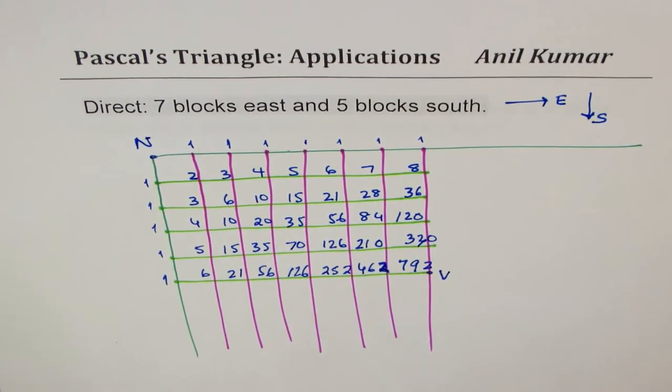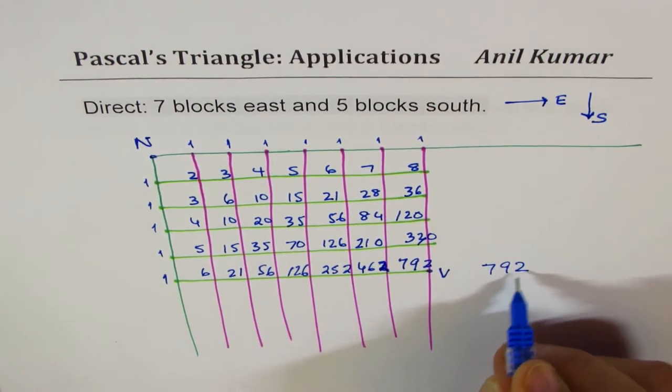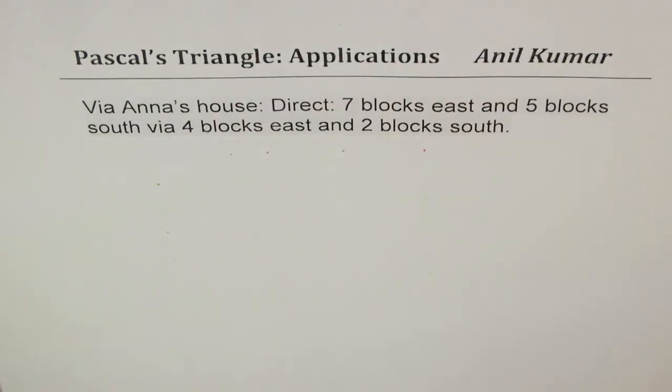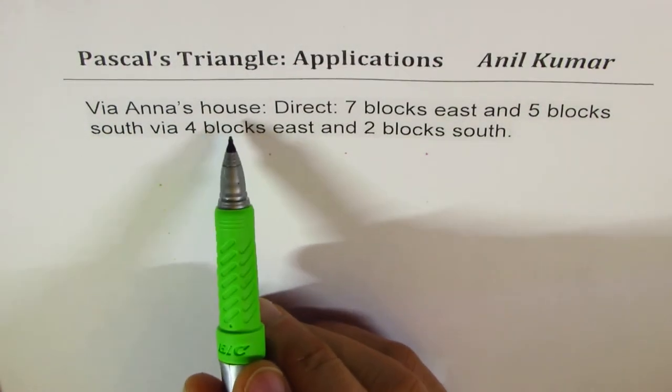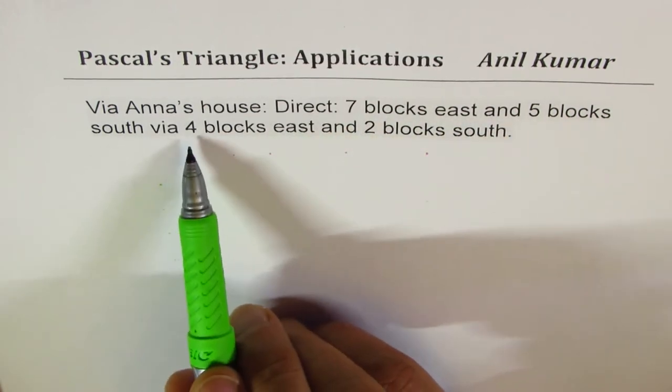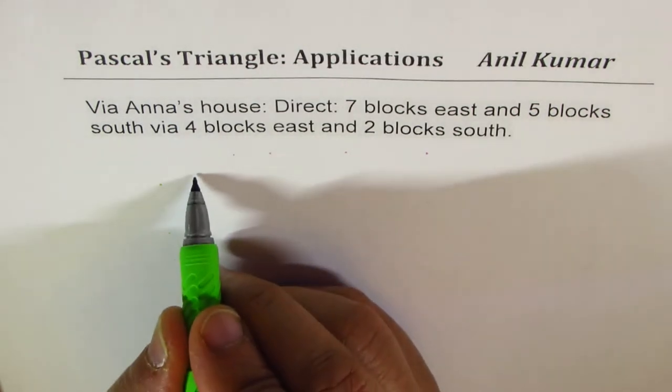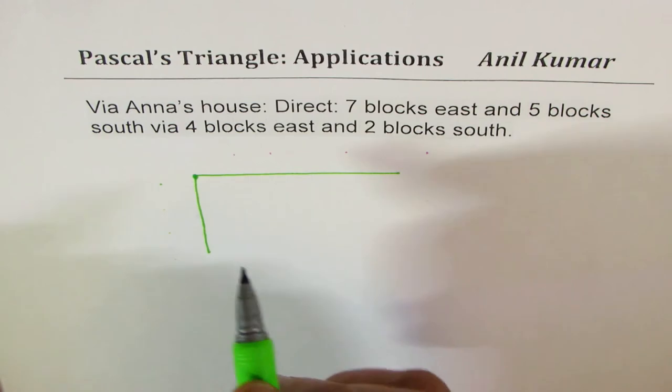Now we will do part two. Let me write down the answer, which is seven hundred and ninety-two unique ways. The next one here is if Nirvan is going via Anna's house. Now let us do part B, in which Nirvan decides to go via Anna's house. That means he has to go seven blocks east and five blocks south via Anna's house, which is four blocks east and two blocks south.